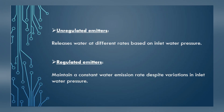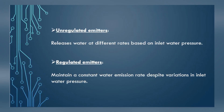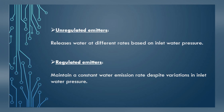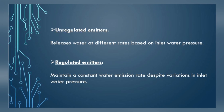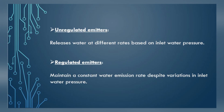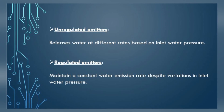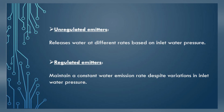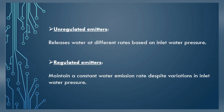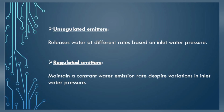4. Unregulated emitters, which release water at different rates based on the inlet water pressure. 5. Regulated emitters, which maintain a constant water emission rate despite variations in inlet water pressure.